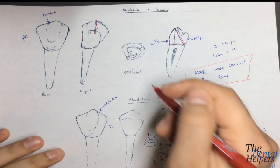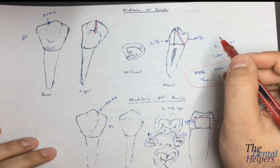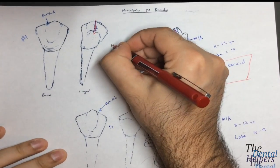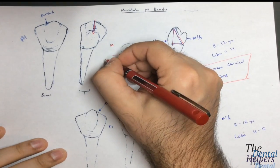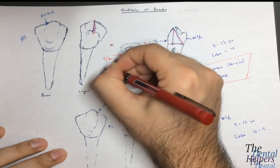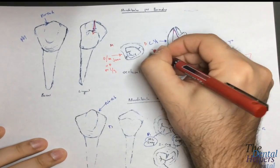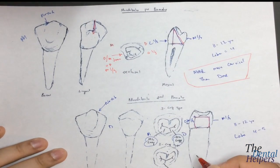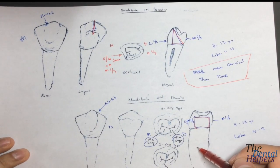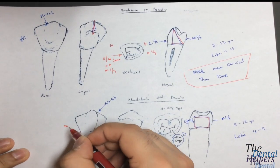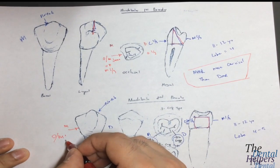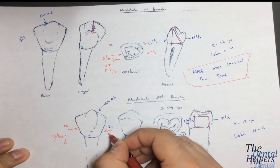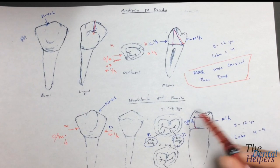In terms of contacts, from the mesial, the contacts are going to be at the occlusal-middle junction or the middle third. On the distal, it's going to be the occlusal third. The nice thing is you don't have to memorize two different things for the two-cusp versus three-cusp form — for the mesial, it's at the occlusal-middle junction and the middle third, and that's the same for both types.